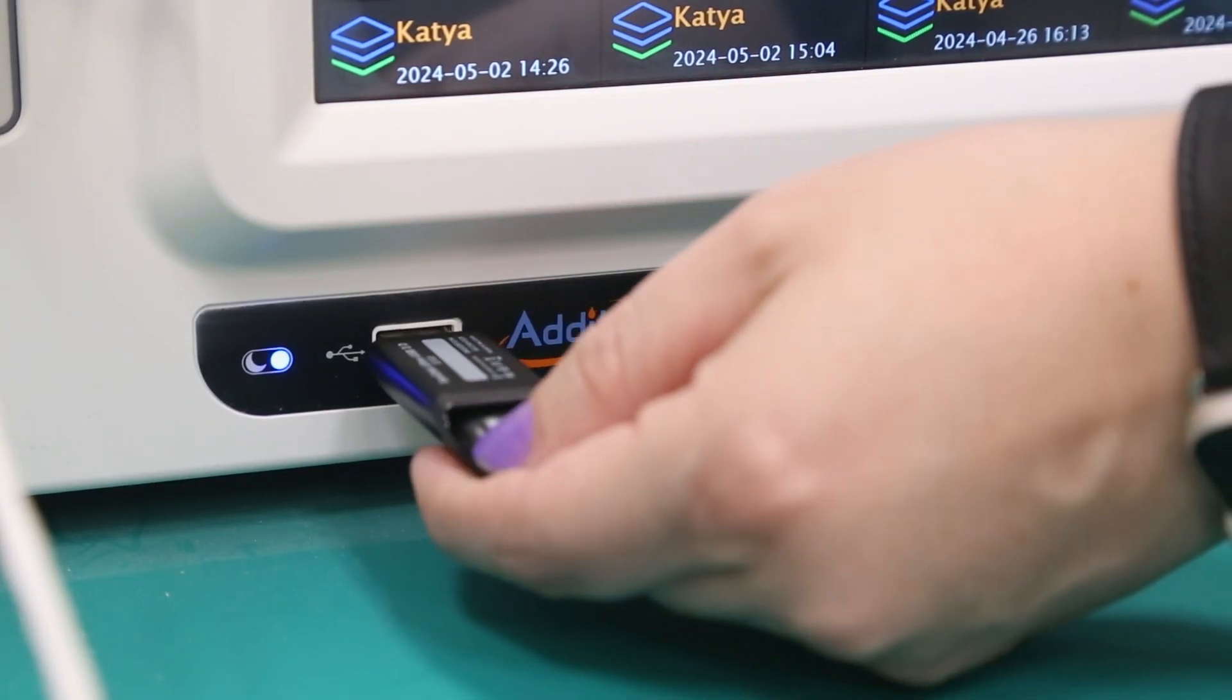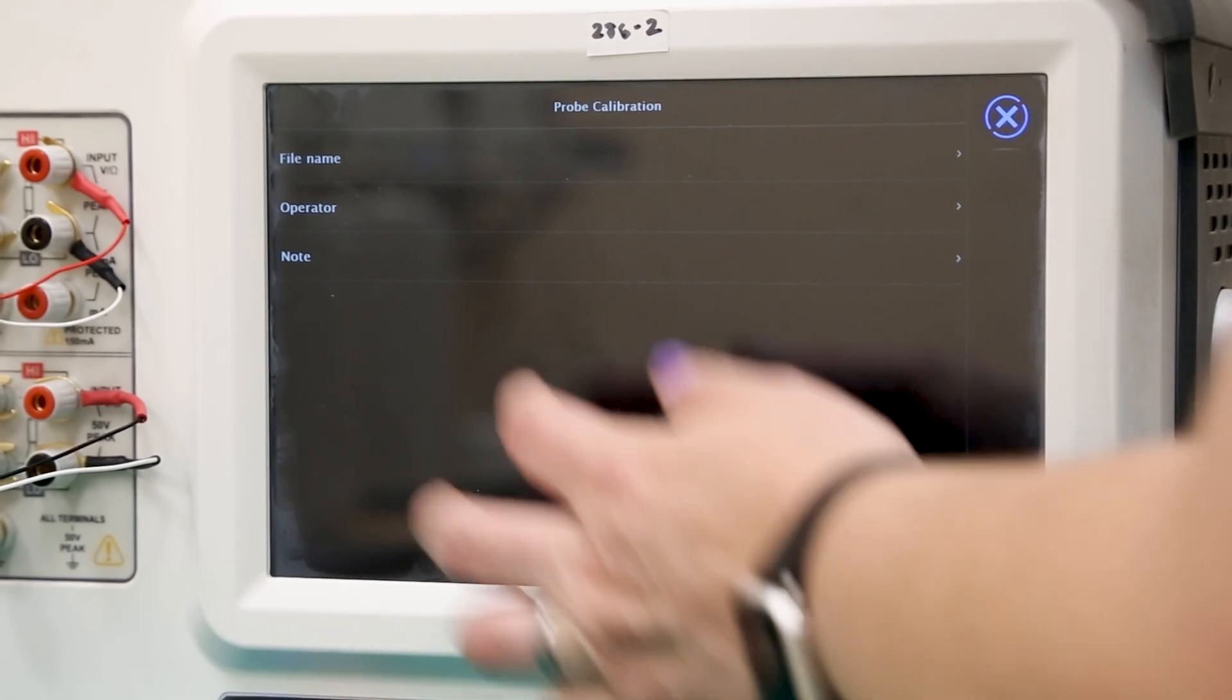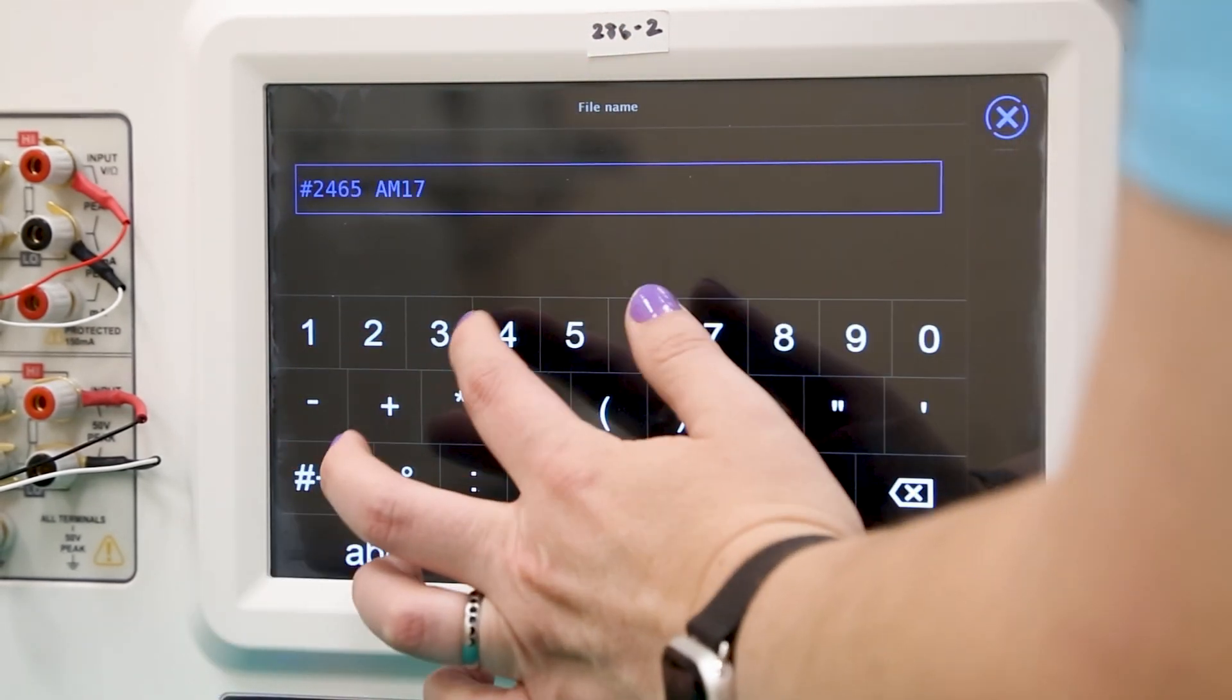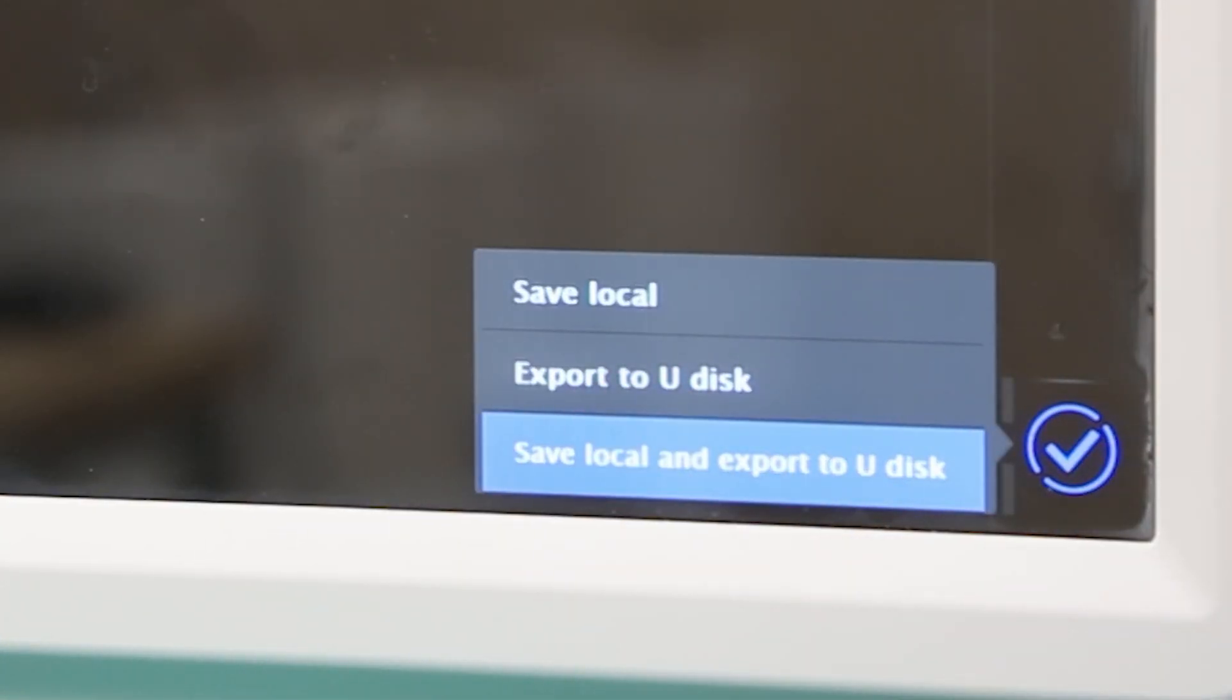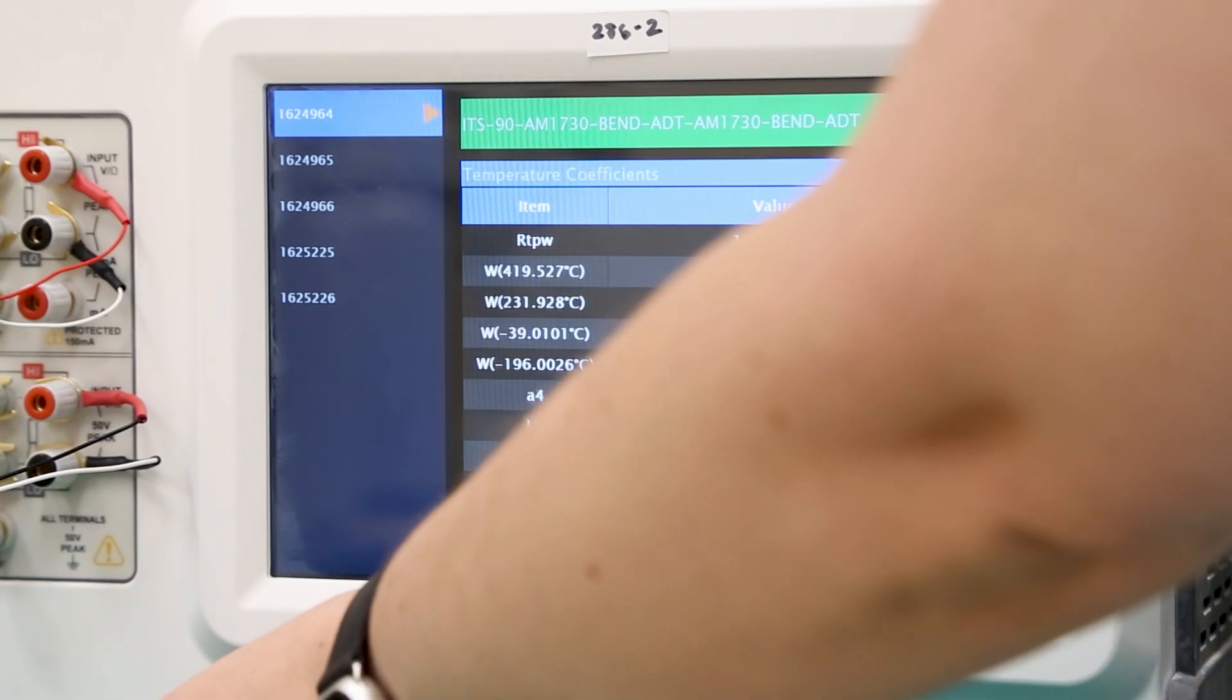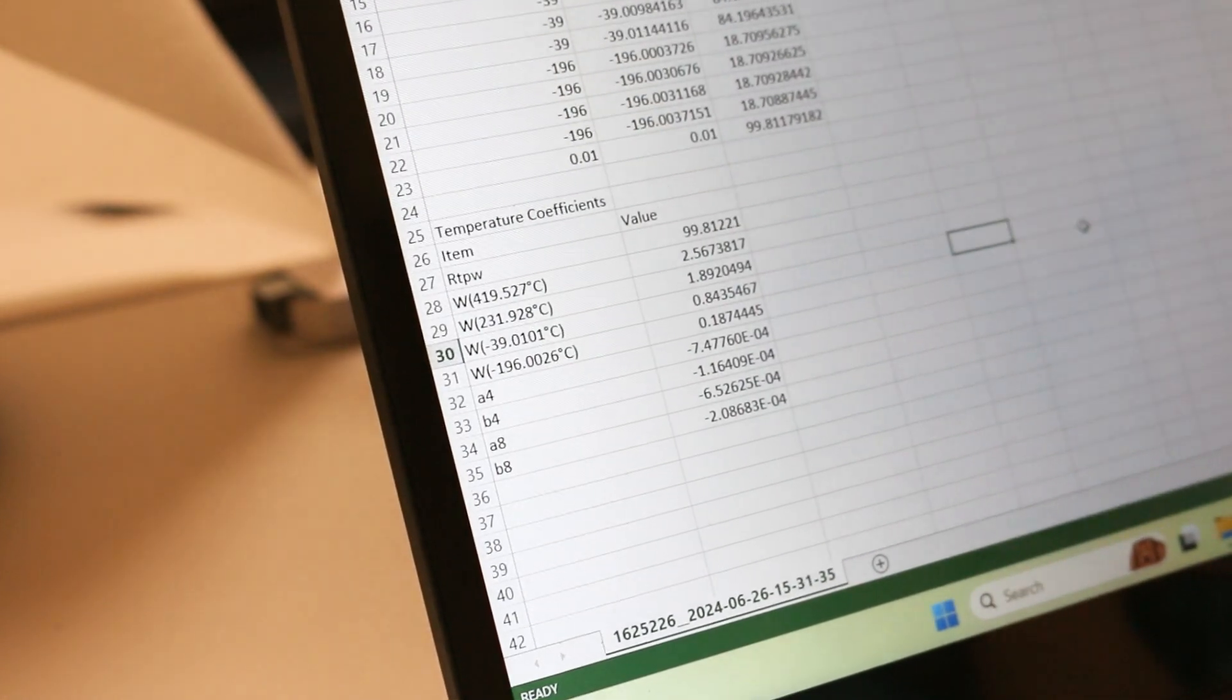These results can then be saved and exported by first inserting a USB drive, then pressing the next arrow in the bottom right. Here the user can enter the file name, the operator name, and any extra notes about the procedure, before exporting by selecting the Save Local and Export to Udisk option in the bottom right corner. Once exported, the data and coefficient calculations will be stored on a CSV file, to be easily accessed and organized using any spreadsheet program.